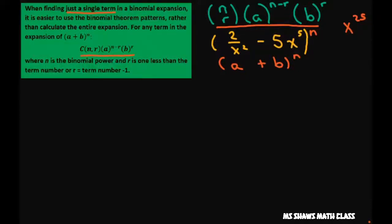So n is the binomial power and r is 1 less than the term number. So if we're doing the 6th term, then r is 1 less than 6. This means our r equals 5.